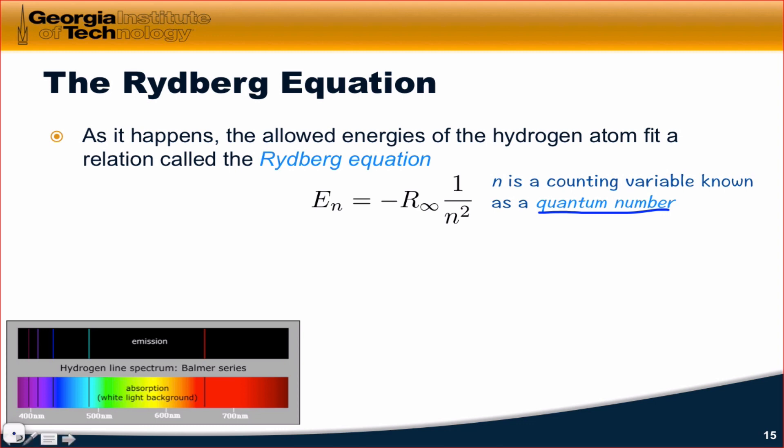It's a counting variable that captures the quantization or the discretization of energy. Because n can only be 1, 2, 3, 4, and what have you, E_n can't take on any old value. It can only take on certain discrete values. Now, there are an infinite number of these because n can increase to positive infinity. However, there's a discrete jump between every pair of adjacent energy levels.